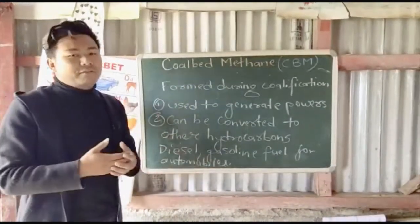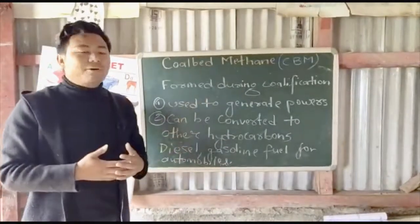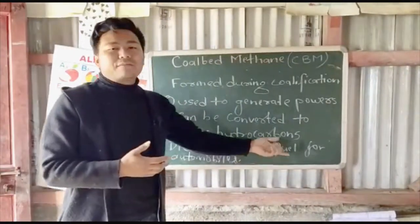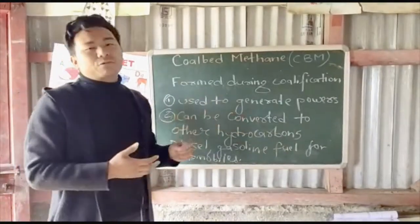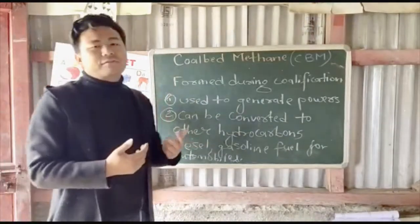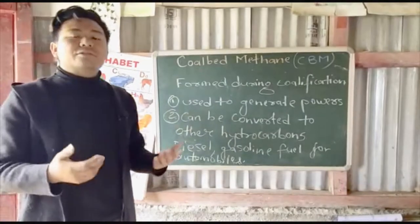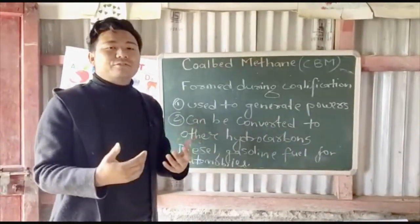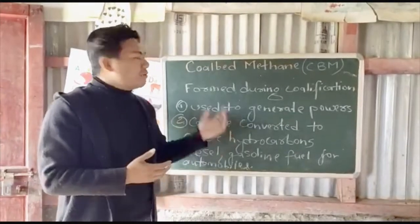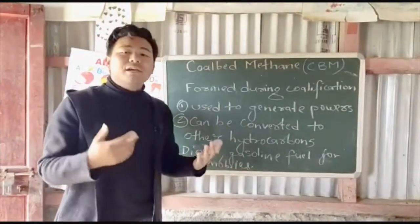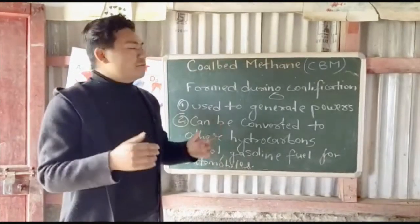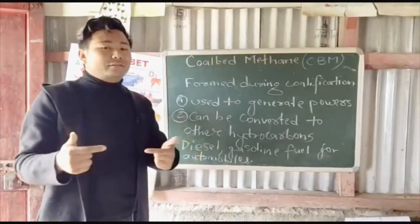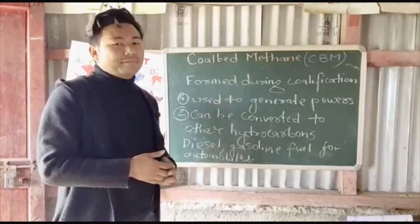In India, where we have a lot of coal mines, coal bed methane can be converted into hydrocarbons like diesel and gasoline, and used as fuel for automobiles. This makes it a good alternative energy source. The fossil fuels we currently have can suffice only for about 125 years, which is why alternatives are important. Thank you so much — if you have any queries, write in the comment section or visit our Facebook page or website for the PDF of this chapter.